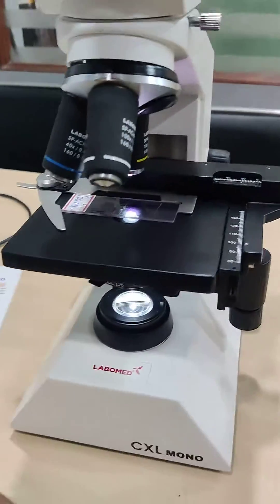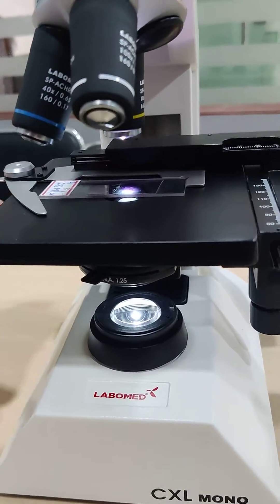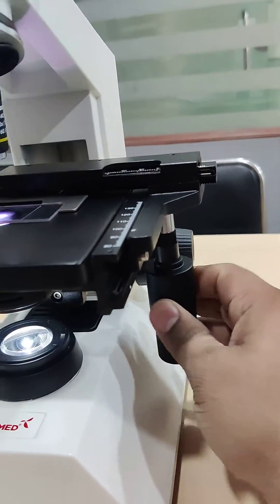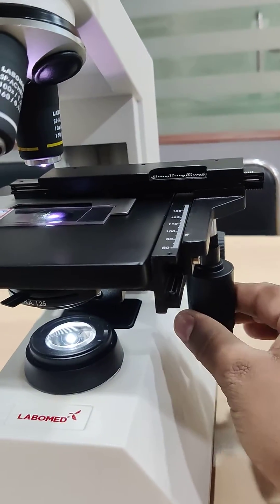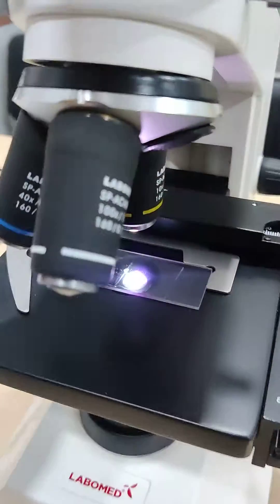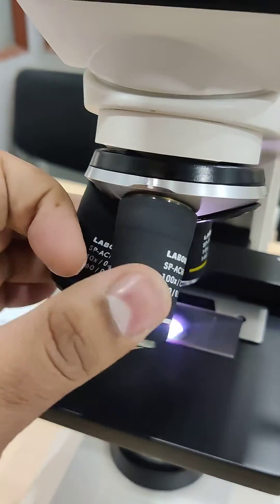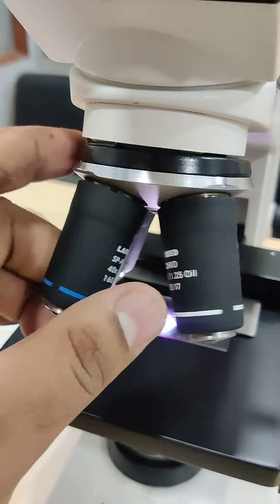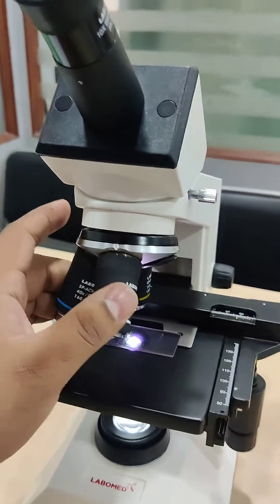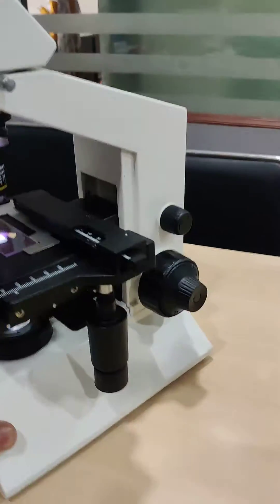Then you get a proper mechanical stage like in bigger microscopes, very smooth movement. You get three objectives: 10x, 40x, and 100x. This is a standard model of Labomate CXL monocular with LED